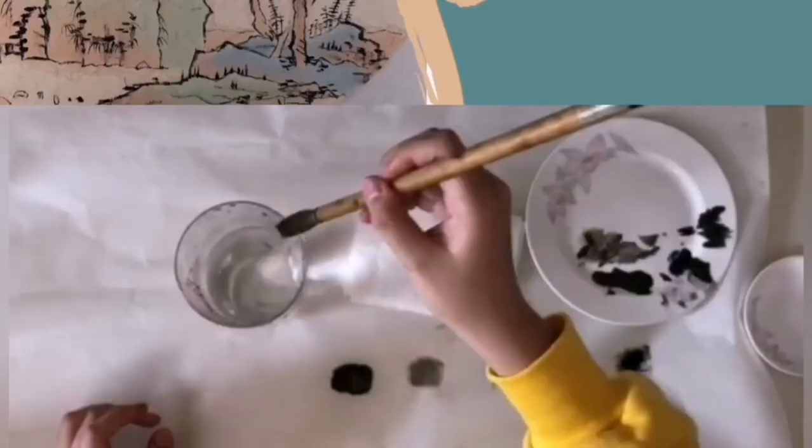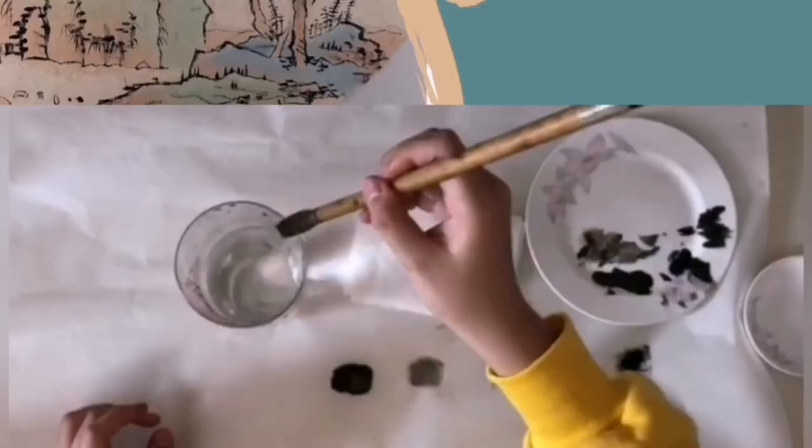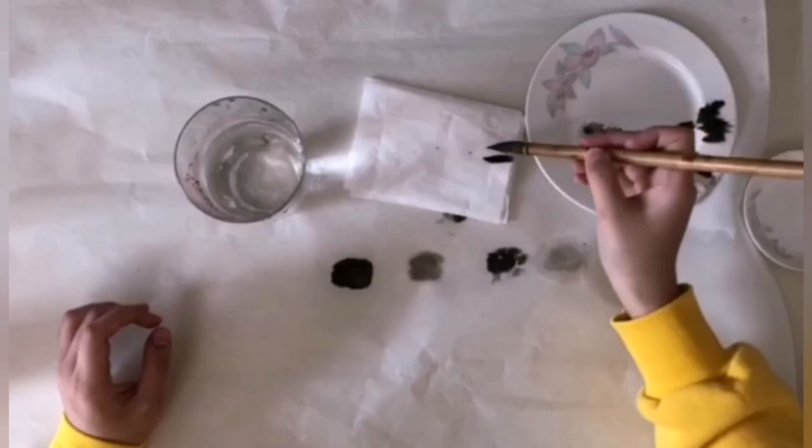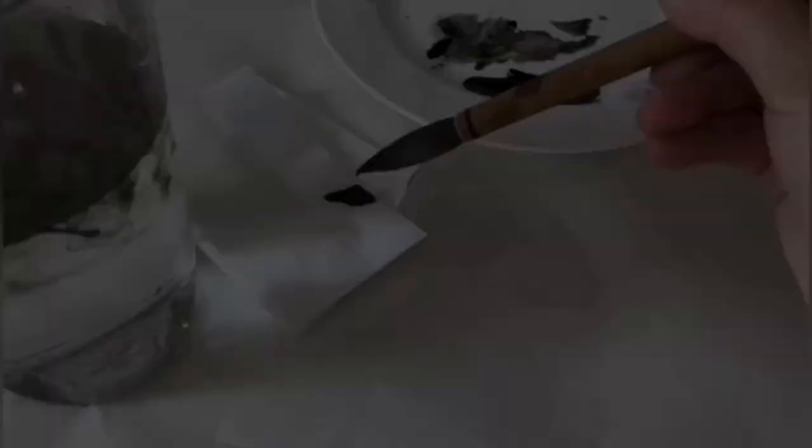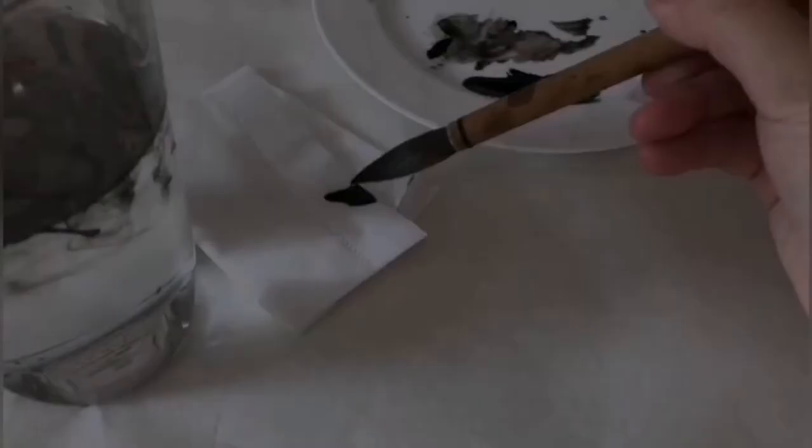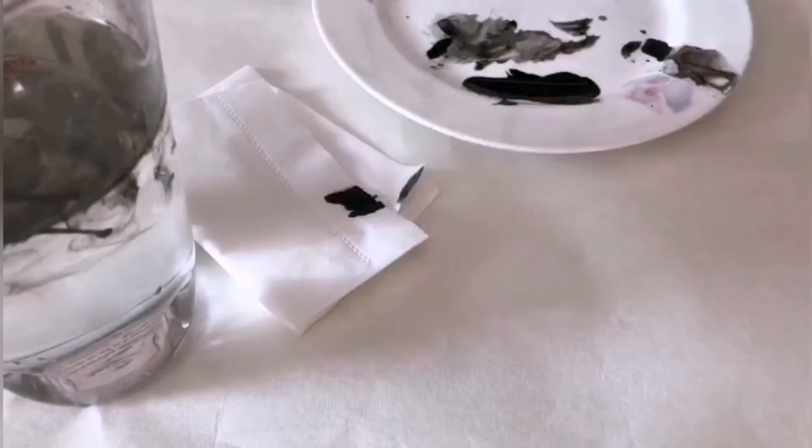In brush art painting, it is important to have variations in ink darkness and dryness. Shades are mainly called nong, dan, gan, shi, and jiao. Nong and dan explain how much ink is contained in a brush. Nong means there is more ink, and dan means less ink.